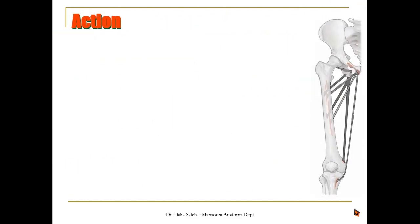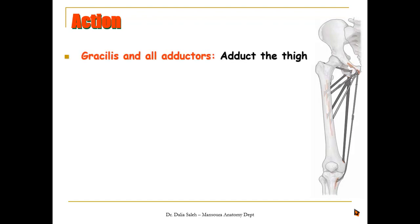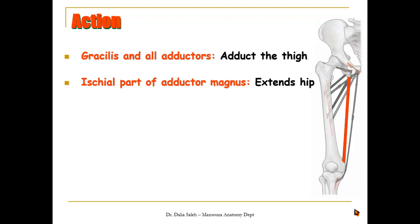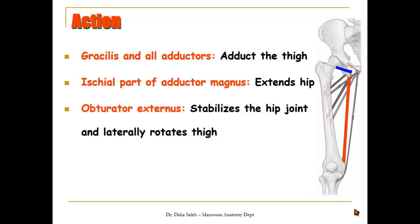In summary, all muscles of the adductor compartment are supplied by the obturator nerve — either its anterior division, posterior division, or both — except the ischial head of the adductor magnus, which is supplied by the sciatic nerve. The gracilis and all adductors adduct the thigh, while the ischial part of adductor magnus extends the hip. The obturator externus, lying close to the hip joint, stabilizes it and also assists in lateral rotation.